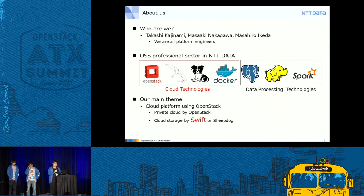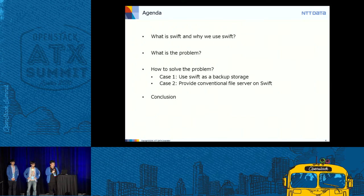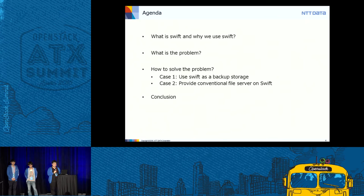We're also working on data processing technologies like PostgreSQL, Hadoop, and Spark. We are especially responsible for cloud platforms using OpenStack technologies and work to provide private cloud by OpenStack and cloud storage using OpenStack Swift — which is why we are going to talk about our Swift projects. Here is the agenda: first, I'll explain what Swift is and why we use it; then Masaaki and Masahiro will explain problems we faced and introduce our approaches with two real use cases; finally, I'll summarize what we learned.